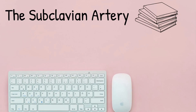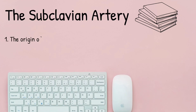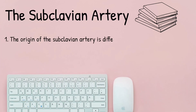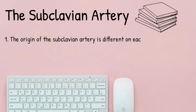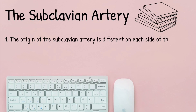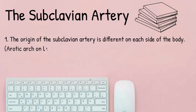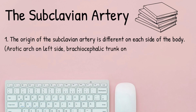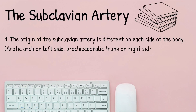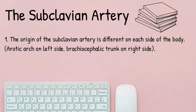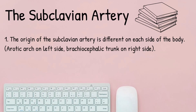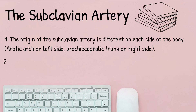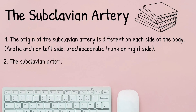Firstly, the origins of the subclavian artery are not symmetrical. On the right side it branches off of the brachiocephalic trunk, one of the branches from the aorta. However on the left it directly branches off the arch of the aorta. A useful memory tip: the left side comes off the loop of the aorta because they both start with an L.